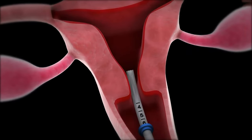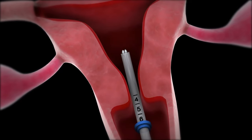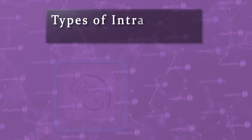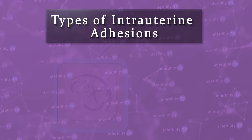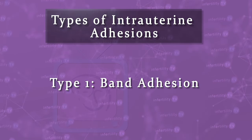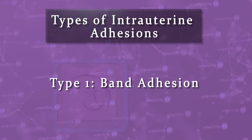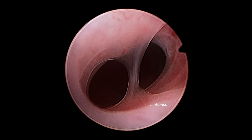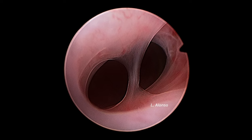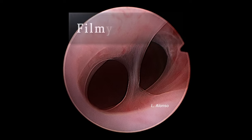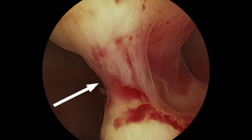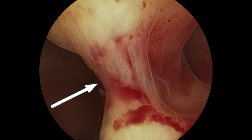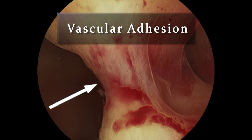Number three, rarely the presence of an intrauterine device may result in adhesions within the uterus. There are different categories of intrauterine adhesions. Category one is called a band adhesion. This type of adhesion is a single piece of tissue that runs from one wall of the uterus to another. It can be very thin, which is called a filmy adhesion, or it can be thicker and even have blood vessels running inside. This is known as a vascular adhesion.